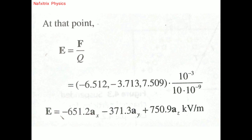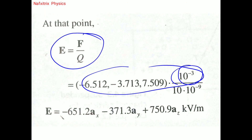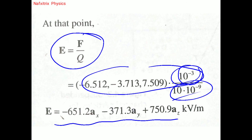To find the electric field intensity, we use E = F/q. The force F is in millinewtons (×10⁻³) and q = 10 nanocoulombs = 10 × 10⁻⁹. Dividing gives the electric field intensity in kilovolts per meter.